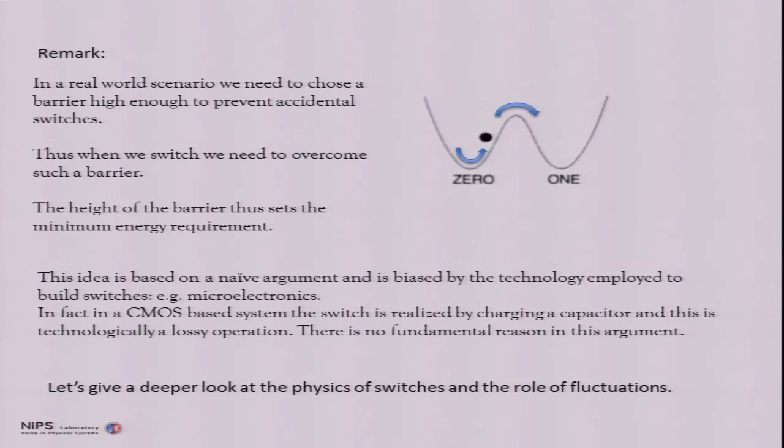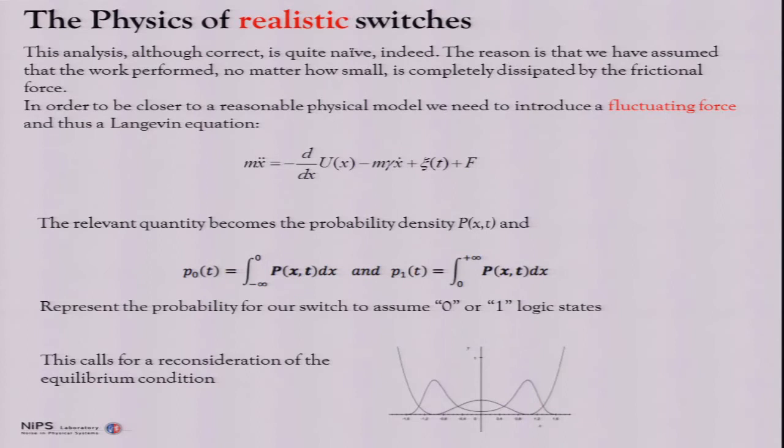It is true that in microelectronics, this is usually assumed as an energy, the energy that you put on the barrier, lost. And that's due to the technology because usually this is done by charging or discharging a capacitor. And usually this energy is considered lost because this is a lossy operation. But let's give a deeper look at the physical switches and the role of fluctuations. So, in a real device, actually, you have to take into account that equation of motion has to take into consideration the presence of fluctuations. So, we change a little bit the Newton equation by adding another force. And this force is actually the fluctuating force. The force that accounts for the fact that the system is not isolated, but is in contact with the thermal bath that represents the fluctuating force.